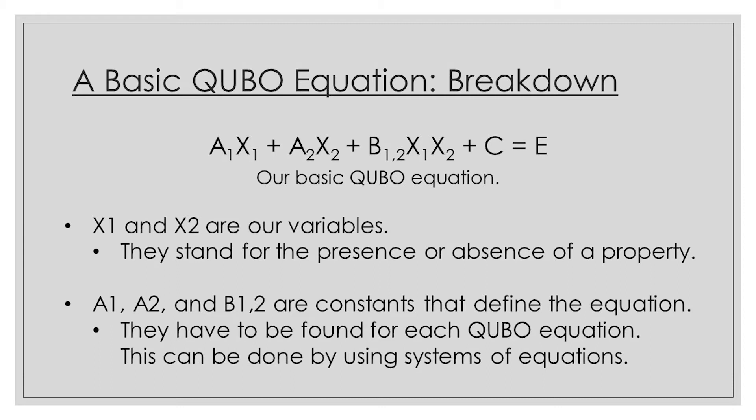The x1 and x2 are variables. They stand for the presence or absence of a specific property. Because this is a QUBO equation, this means that they can either have a value of 0 or 1, and this can stand for anything when you're defining a condition as a QUBO equation. x1 could be whether a shirt is red or not, or x2 could be whether a shirt is blue or not, and you could define the equation so that one of them must have a value of 1 while the other has a value of 0. Really it's up to the condition you're defining at hand.